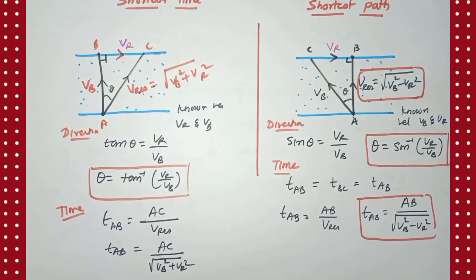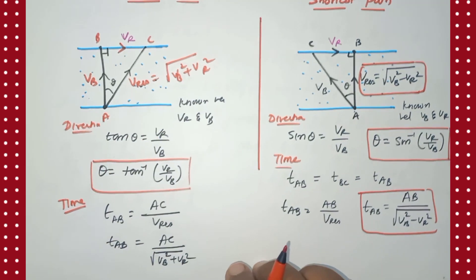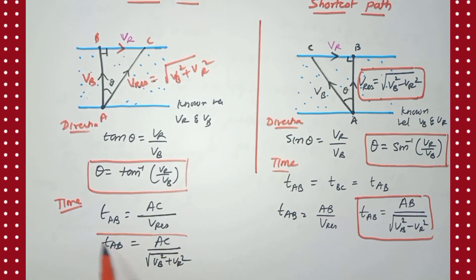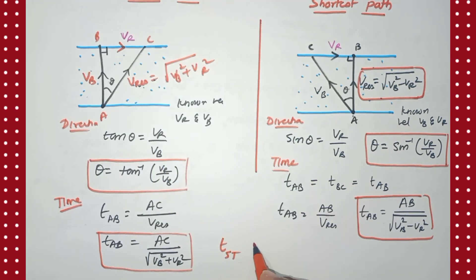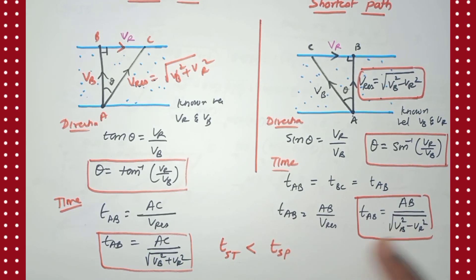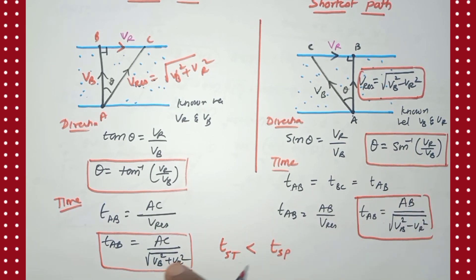Comparing the two times: for shortest path, the denominator is √(vb² − vr²); for shortest time, the denominator is √(vb² + vr²). Since the denominator in the shortest time case is larger (addition vs. subtraction), the fraction is smaller — so time along the shortest time path is less than the time along the shortest path.